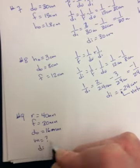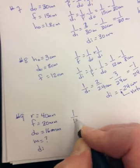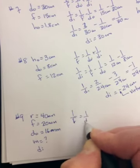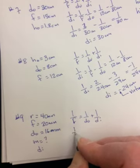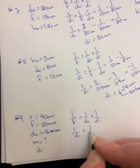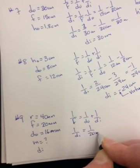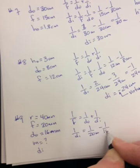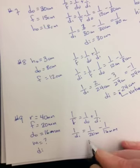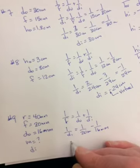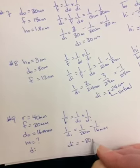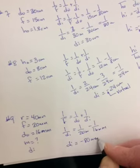So to find the magnification, you first need to find DI. So 1 over F equals 1 over DO plus 1 over DI. When you do this, 1 over DI, 1 over 20 minus 1 over 16. Common denominator should be 80. 4 over 80 minus 5 over 80. DI is going to be negative 80 millimeters.